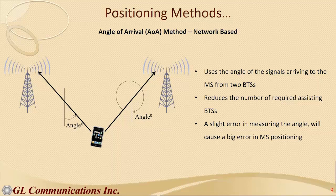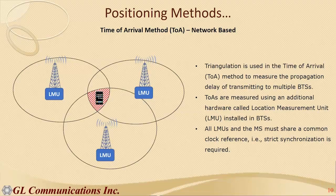The Angle of Arrival method uses the received angles of signals arriving at the BTS. You need at least two BTS sites for an approximation — more is better. A downside of this method is that a slight error in the measured angle results in a significantly larger error in the calculated mobile position.